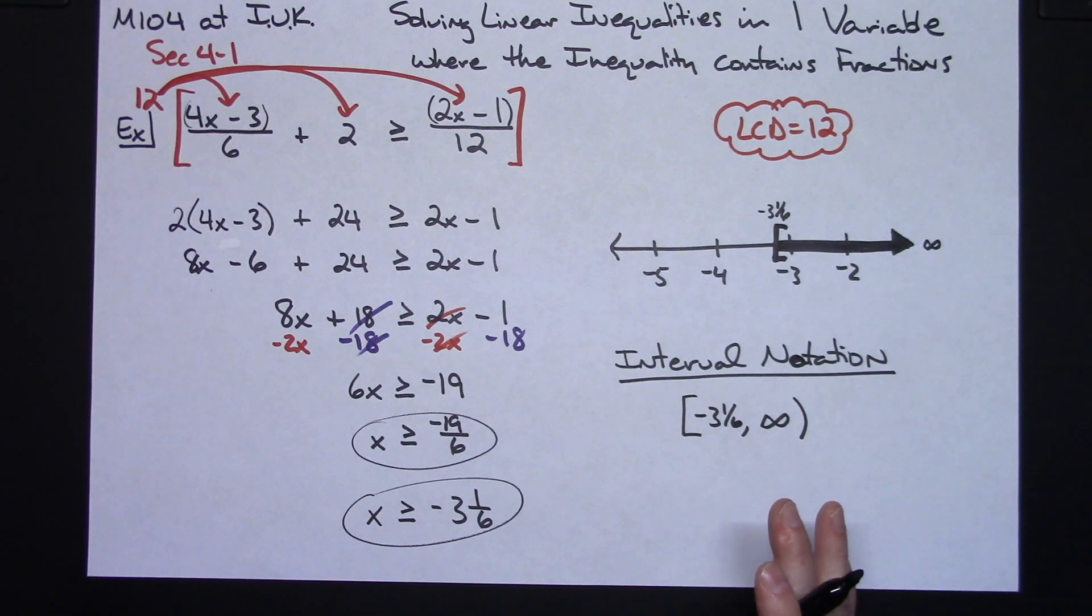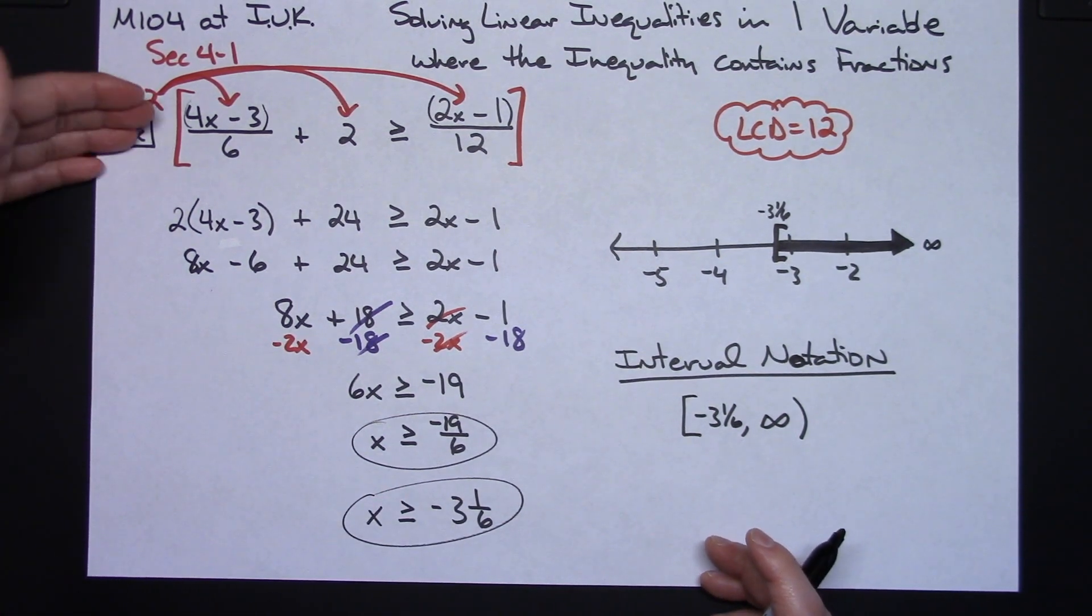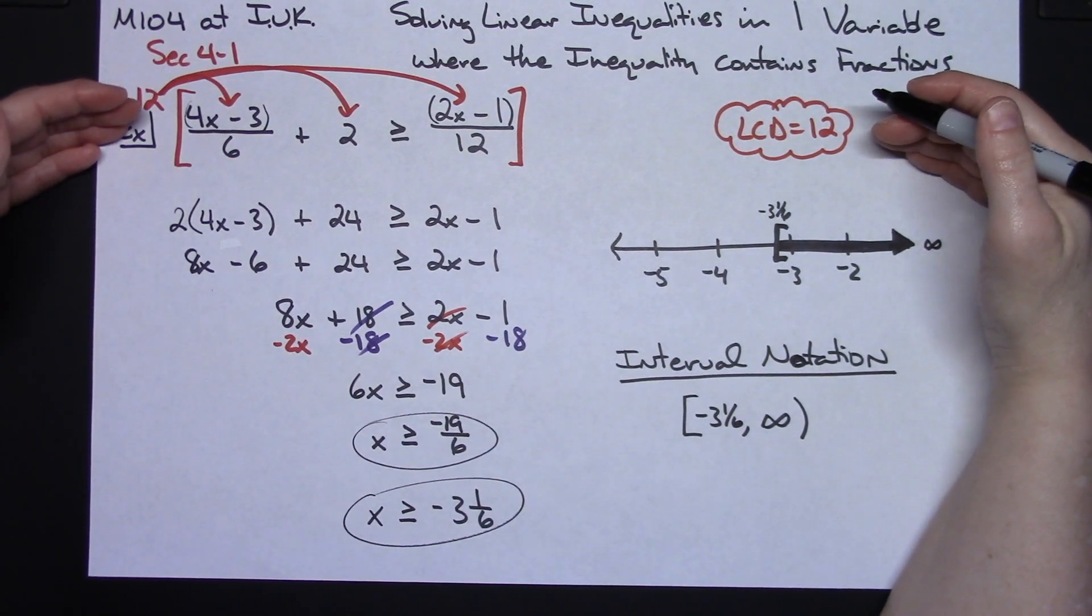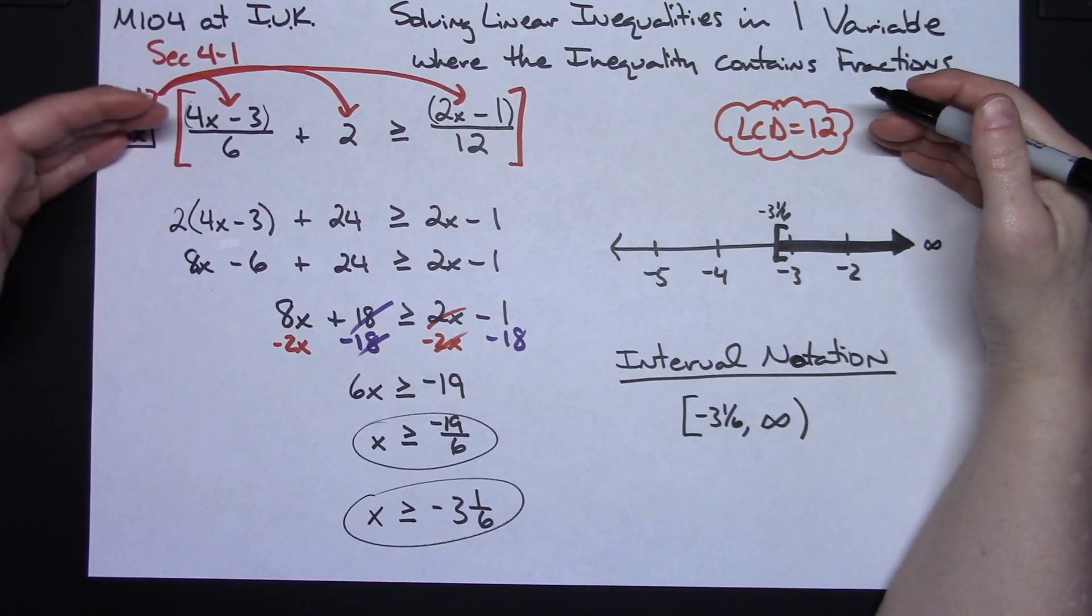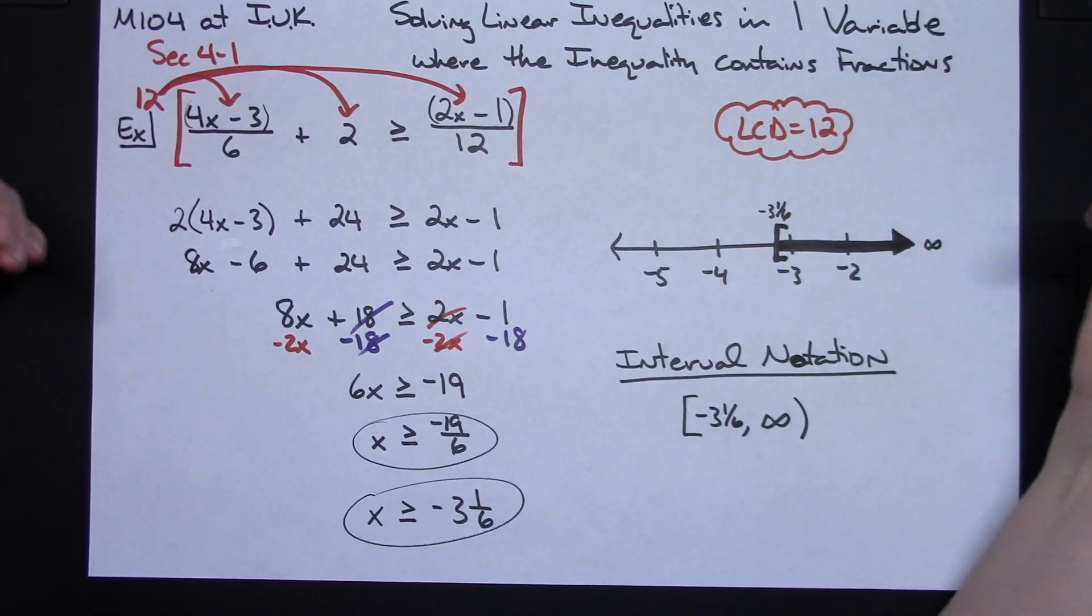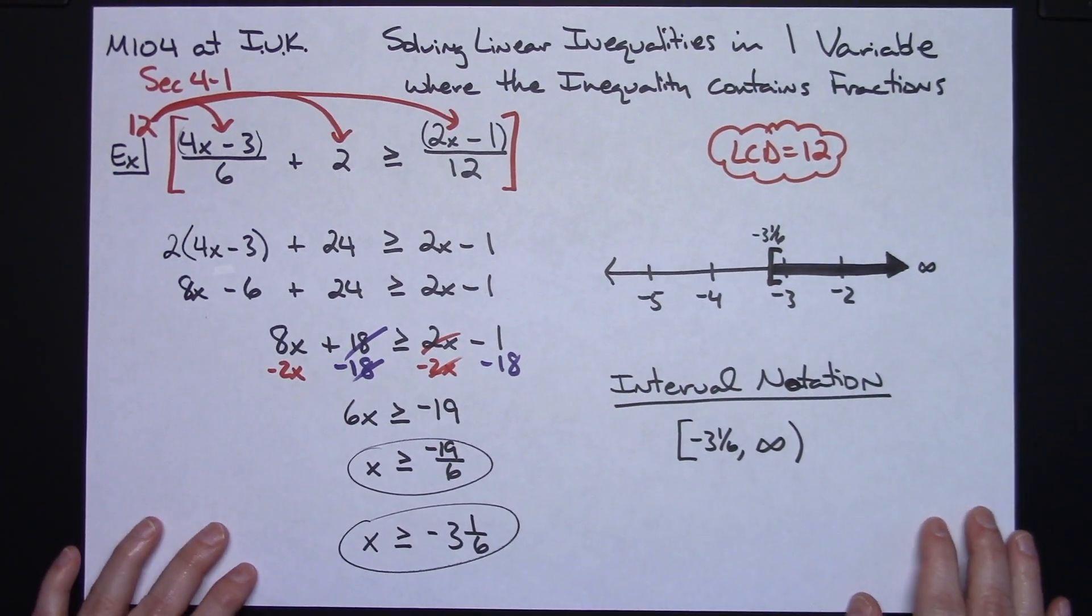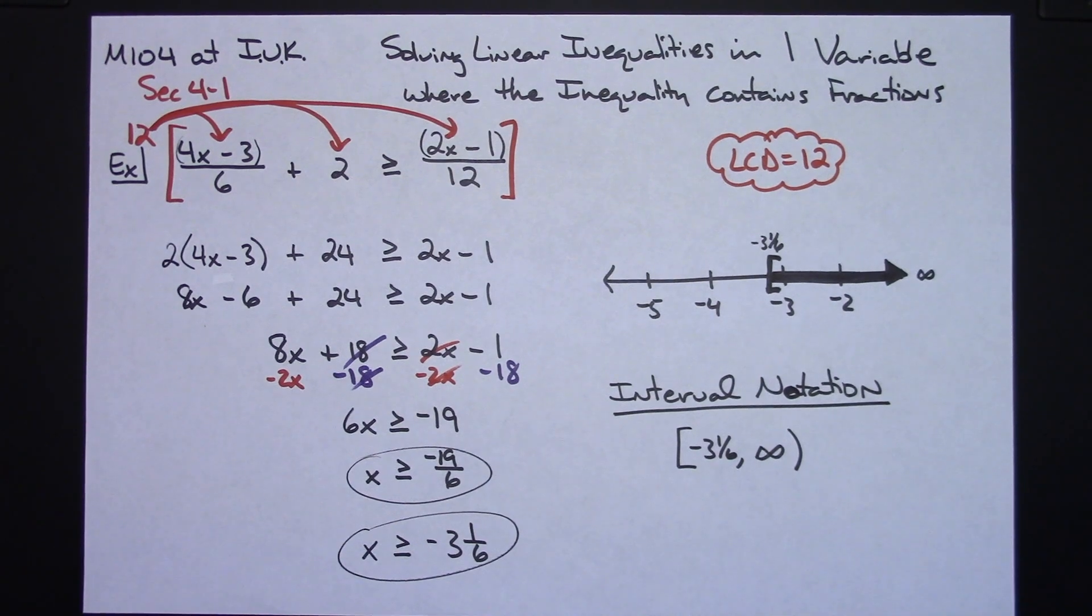So really just one more example for my M104 students showing how to deal with those fractions. Multiplying through by that least common denominator. If you do that correctly, the very next step, all your fractions will be gone. And then it'll be just your standard inequality. Thanks for watching. If the videos are helping, please share with your friends so they can benefit too. And don't forget to subscribe to the channel. Thanks.